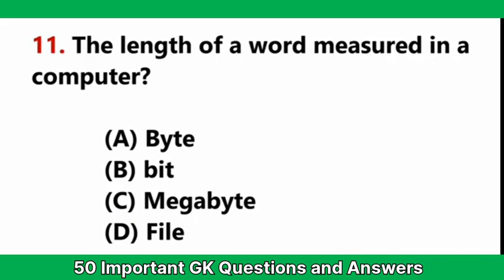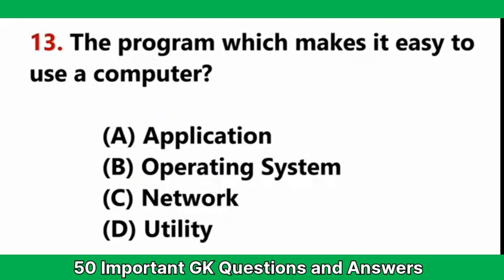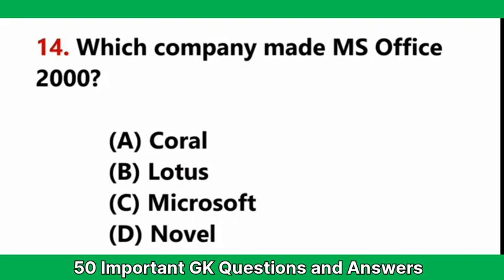The length of a word measured in a computer — Answer B: bits. What is a logic gate? — Answer C: a type of circuit. The program which makes it easy to use a computer — Answer D: utility. Which company made MS Office 2000? — Answer C: Microsoft.